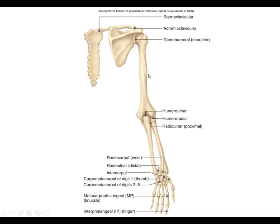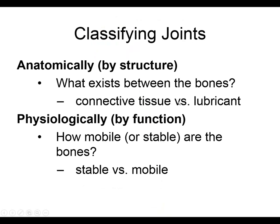Here are some examples: the sternoclavicular joint, the glenohumeral joint — which is the shoulder joint — the acromioclavicular joint between the acromion and the clavicle, the humeral-ulnar, humeral-radial, radio-ulnar, proximal radio-ulnar, and distal radio-ulnar joints. The names come from the bones that are separated from each other by these articulations.